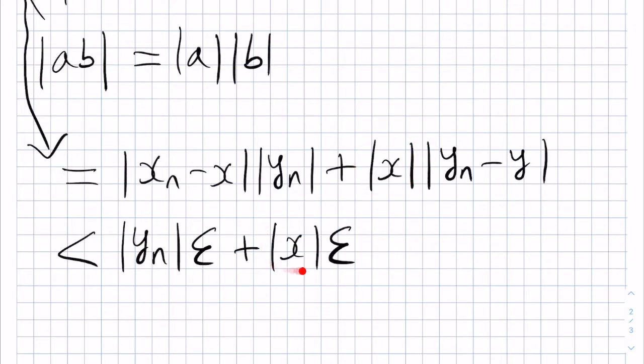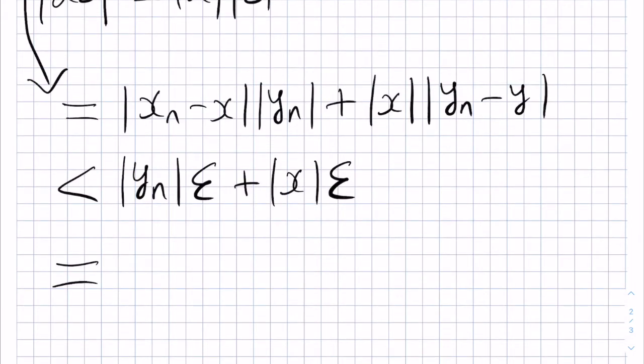Again, modulus of X goes to here, and with the inequality we have this epsilon from here. Bundling these together, this is equal to the modulus of Yn plus the modulus of X times by epsilon.